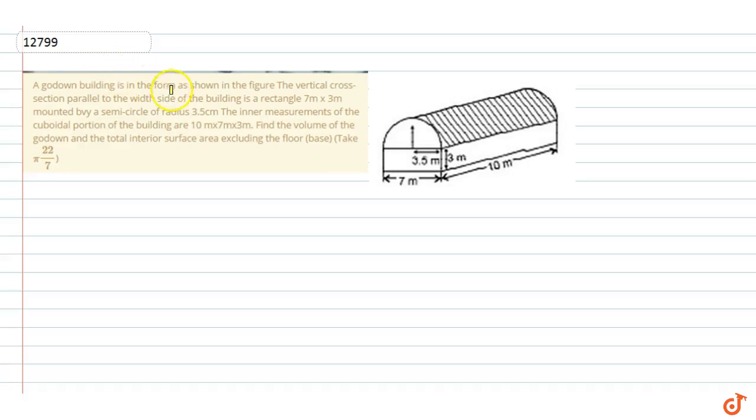A god-owned building is in the form as shown in the figure. The vertical cross-section parallel to the width side of the building is a rectangle 7m x 3m mounted by a semicircle of radius 3.5 centimeter, and the inner measurement of the cuboidal portion of the building are 10m x 7m x 3m.